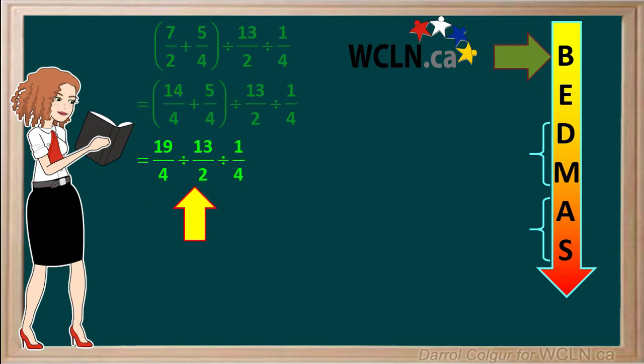So now our question is 19 over 4 divided by 13 over 2 divided by 1 quarter. We finished the operation within the brackets, so we move down to exponents. There are no exponents in this question, so we move down to division and multiplication.